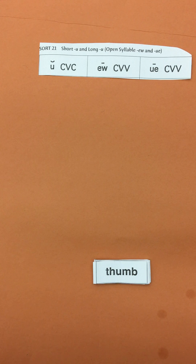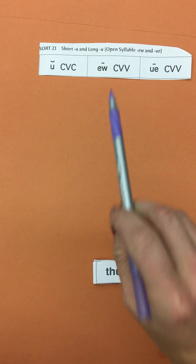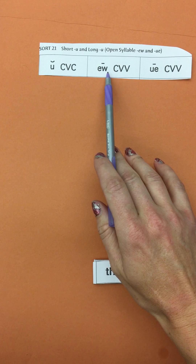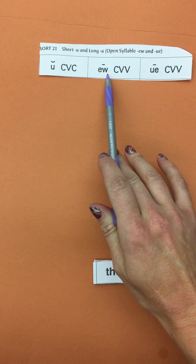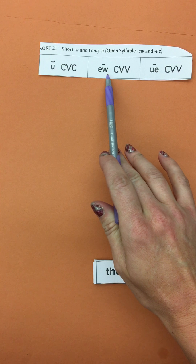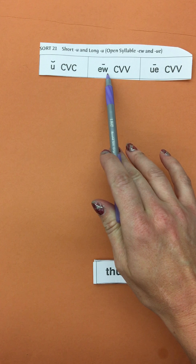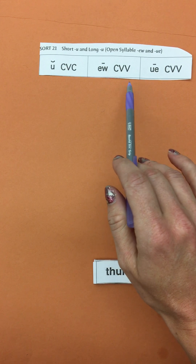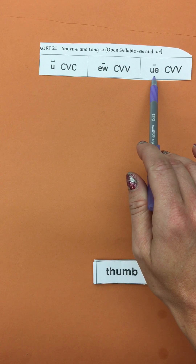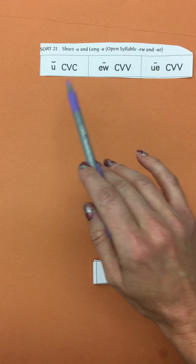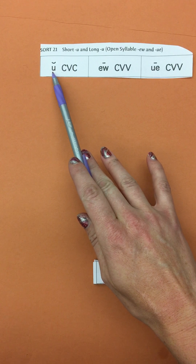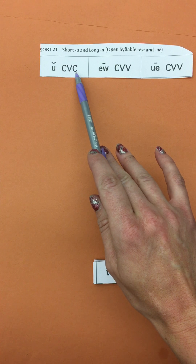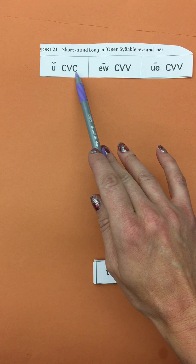We're sorting short U and long U. We have open syllables here. The W is really a consonant, but in these words it's acting like a vowel — if you don't hear any W sound. So we have the 'ooh' sound, and this one makes the same sound. We're contrasting that with the short U sound, which has a consonant after it, making it a closed syllable.